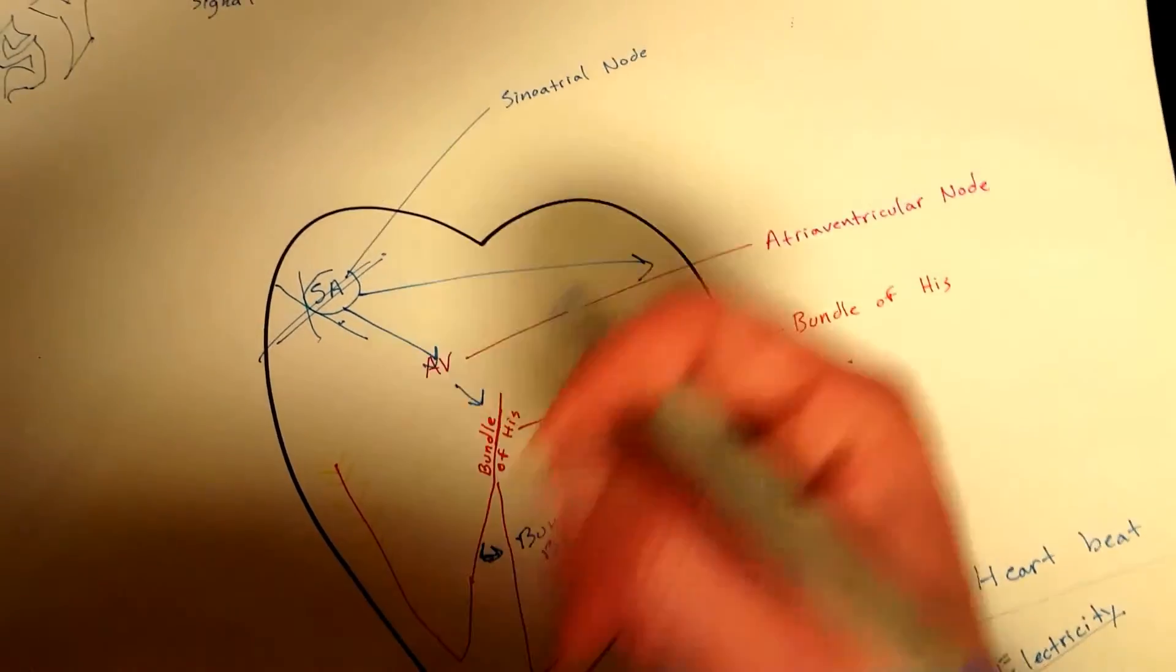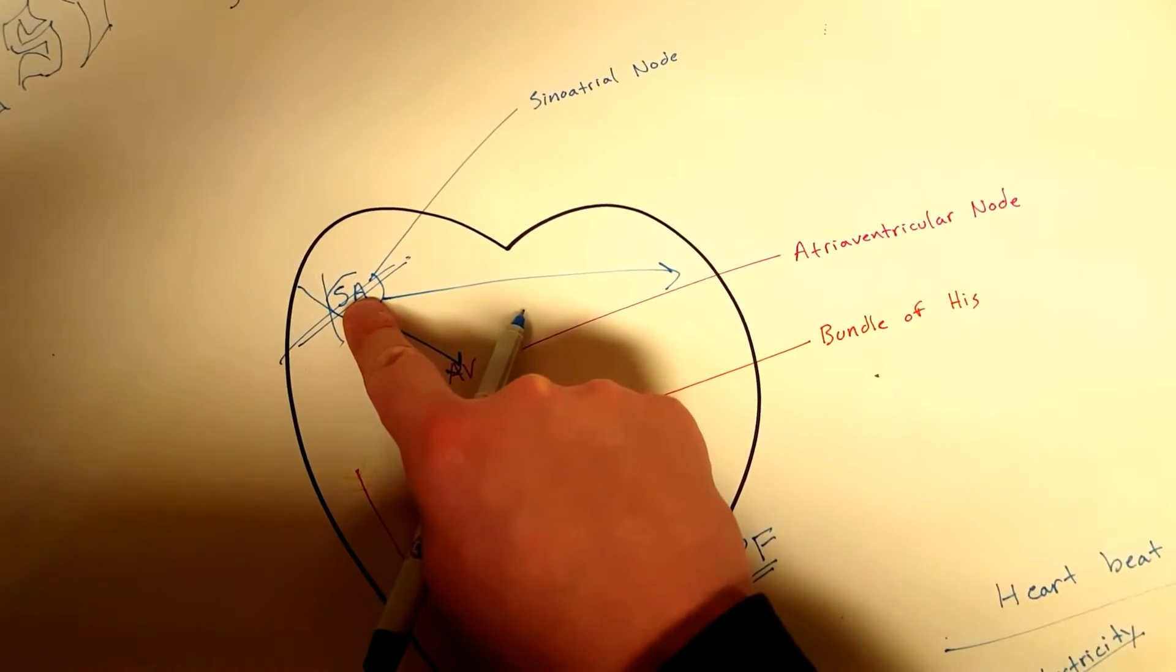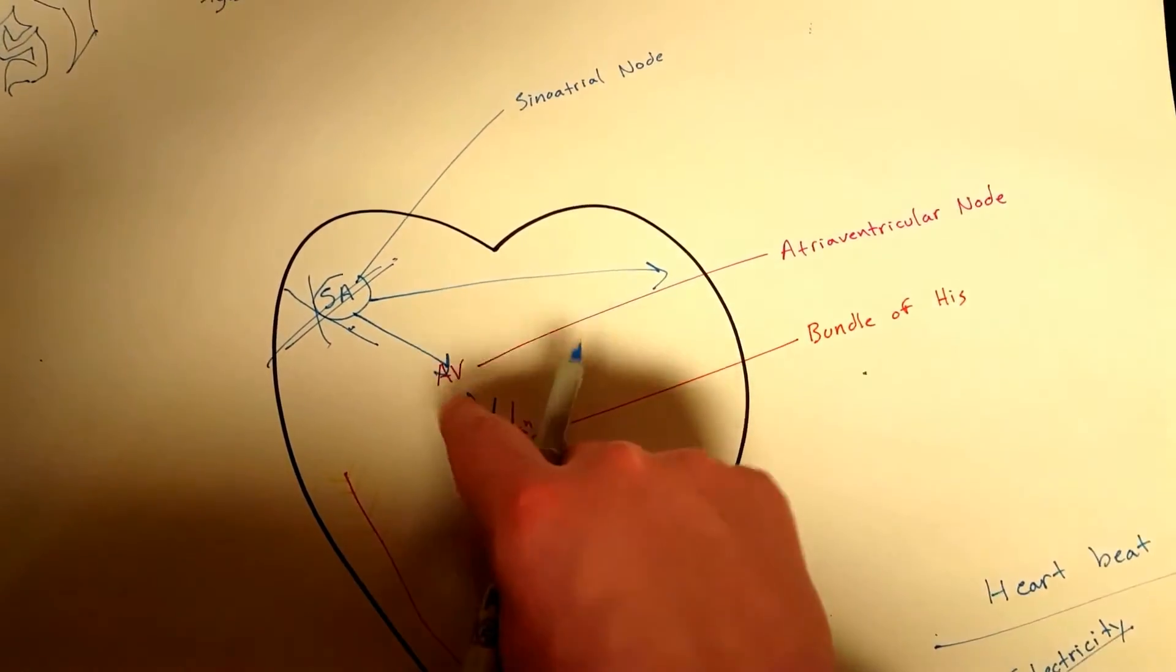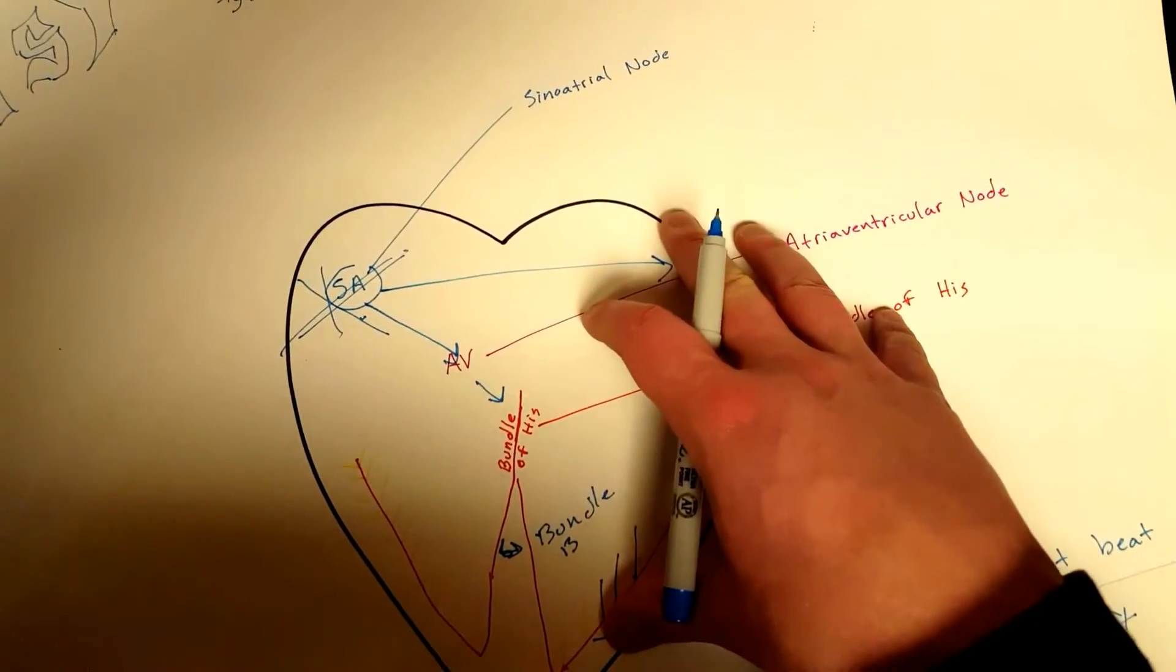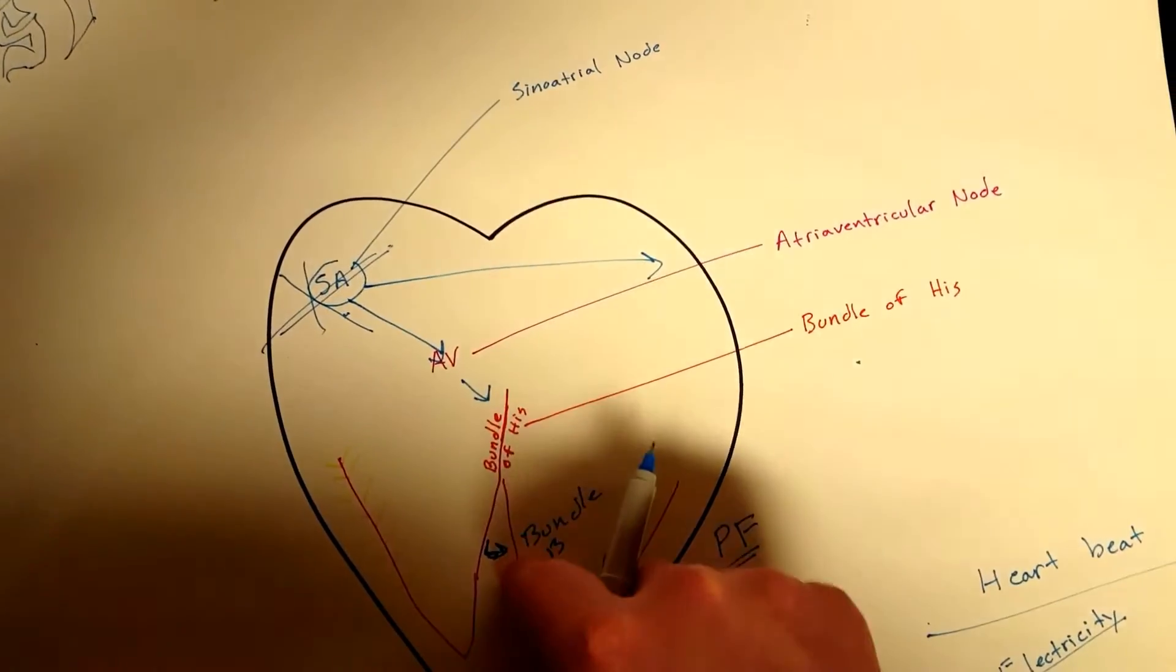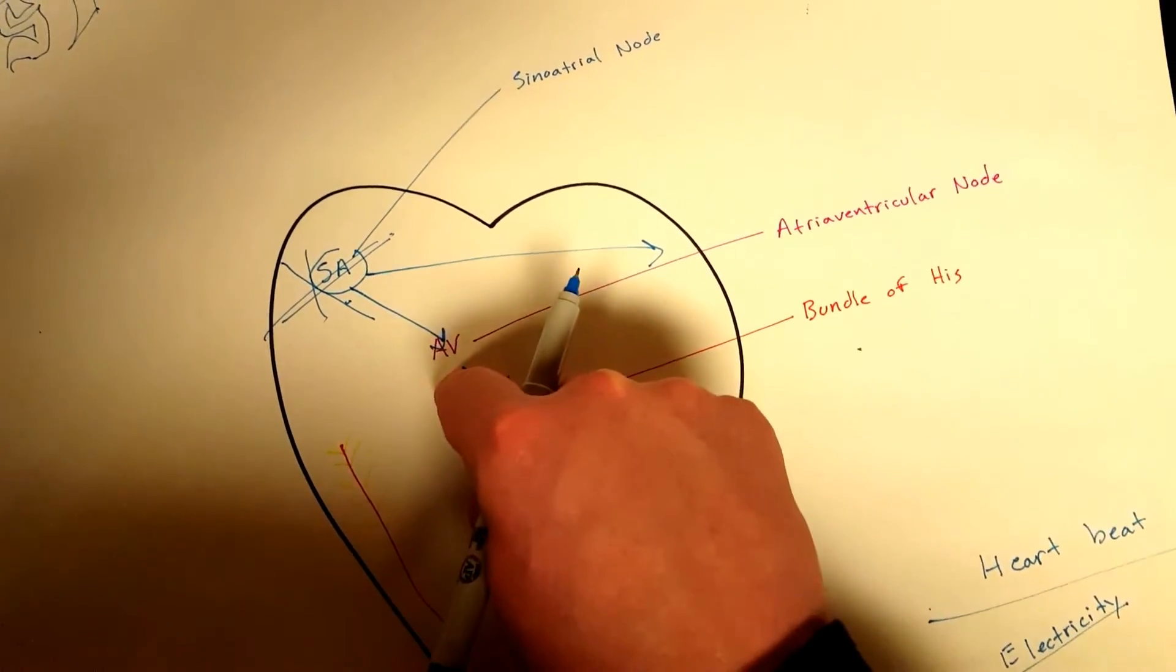Well, your AV node will actually take control in place of the SA node, and now this will generate the impulses. And where I'm going with this is that each one is set at different tones and they're like backup generators to each other.